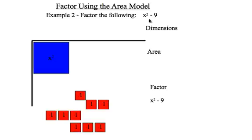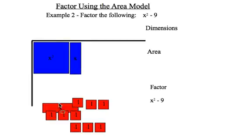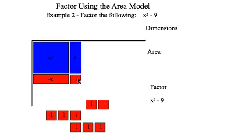My next example, x squared minus 9. Again there's nothing I can do with these ones against the x squareds because there is no side that they have in common. So I need to invoke the zero principle again and introduce some more terms. So let's introduce an x or 2. So I have to balance those with negative x's, and we can see that uses up one of the negative ones.